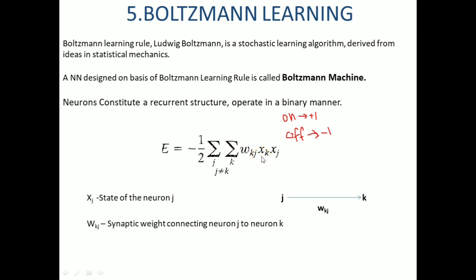Here x_j is the state of neuron j, x_k is the state of neuron k, and w_kj is the synaptic weight connecting neuron j to neuron k. j not equal to k means that none of the neurons in the machine has self-feedback.